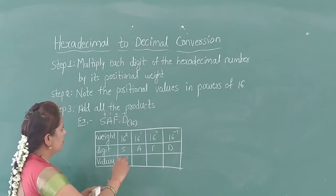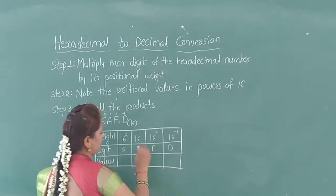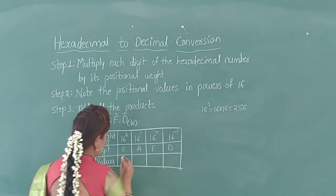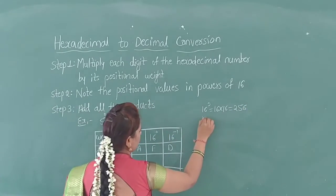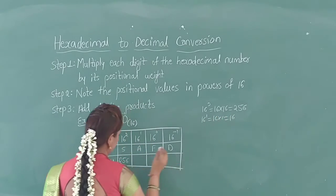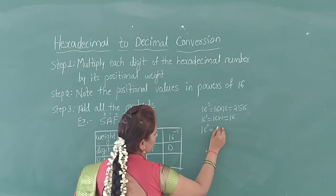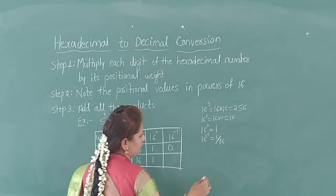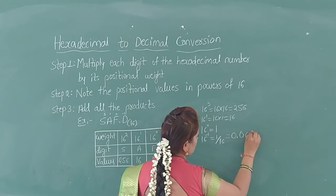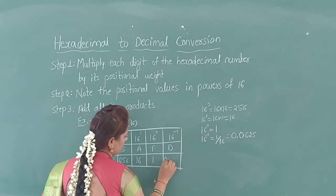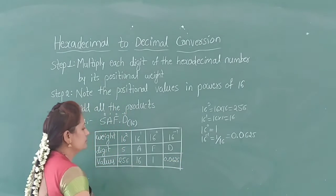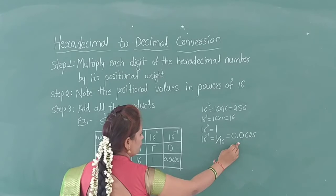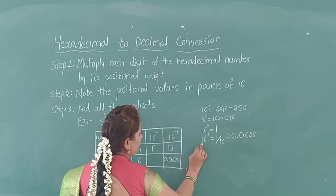Note the equivalent positional values in powers of 16. 16 raised to 2 means multiply 16 two times, giving 256. 16 raised to 1 is 16. 16 raised to 0 is 1 — anything raised to 0 is 1. 16 raised to minus 1 means divided by 16, so we get the value 0.0625.